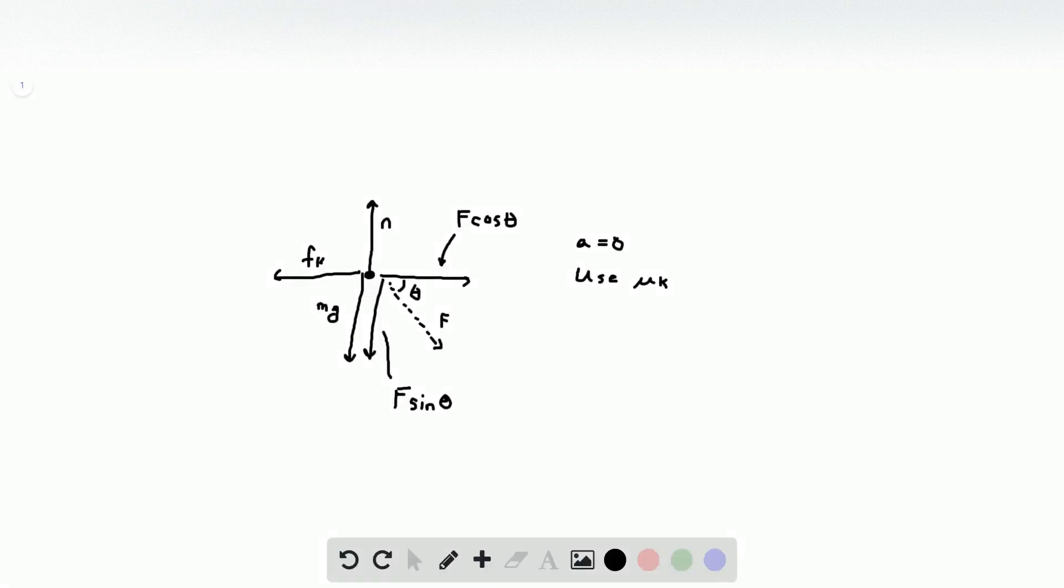This is the free body diagram for this problem. For part A, we know we want to use the kinetic friction coefficient because we're told that the box is moving at constant velocity, so it's not stationary. We want to find the force exerted in the diagonal here to keep it moving at constant velocity. We have a normal force pointing up, a friction force pointing to the left, the force exerted by the woman downward at an angle theta, and we have gravity going down as well.